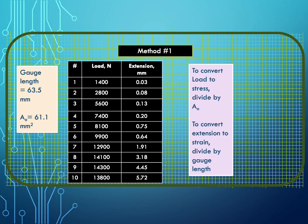Okay. So method one, here I'm given data, load and extension data. In this case, in newtons and in millimeters, I'm told that the gauge length is 63.5 millimeters and that the cross-sectional area is 61.1 square millimeters. So to get my values of stress, I need to divide each of these load levels by the cross-sectional area, 61.1. For strain, I need to take each of my extension values and divide it by the original gauge length, 63.5.